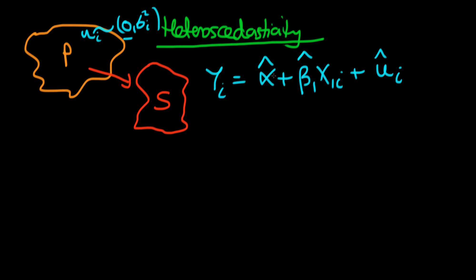We use estimated errors U-hat_i because we don't actually observe the true Alpha and Beta_1 — we have to estimate them. In general, the estimates Alpha-hat and Beta_1-hat won't exactly equal the true population parameters Alpha and Beta_1. And because of that, our population error U_i won't in general be equal to our estimated error U-hat_i. That's the difference between our error in the population and that which we estimate from our sample.